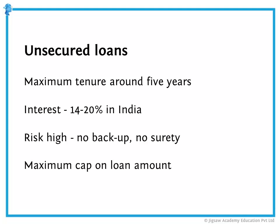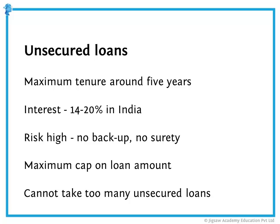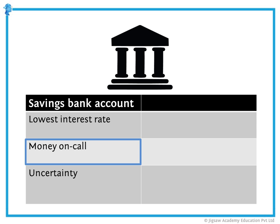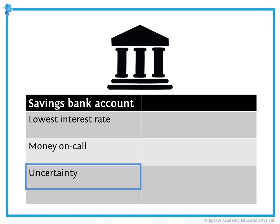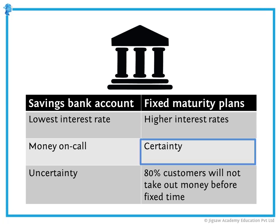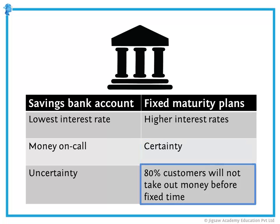Most banks will have a maximum cap on the loan amount for unsecured loans, so one cannot take too many. The savings bank account gives you the lowest interest rate because this is money on call — you can take out the money at your convenience, and the bank is not sure how long that money will stay with it. Whereas fixed maturity plans get higher interest rates because there is a reward for the certainty that at least 80% of customers will not take out the money before the fixed time.